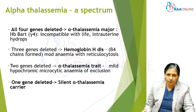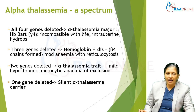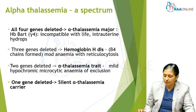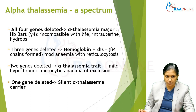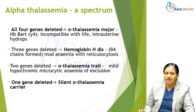Alpha thalassemia is a spectrum. If all four genes are deleted, it is called alpha thalassemia major — this is incompatible with life, and the baby dies in utero with a diagnosis of non-immune fetal hydrops.